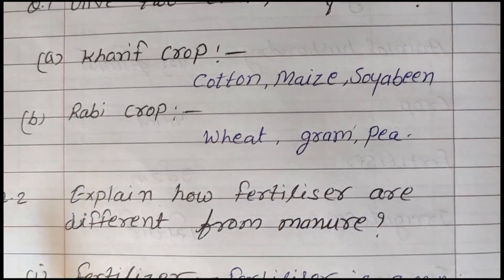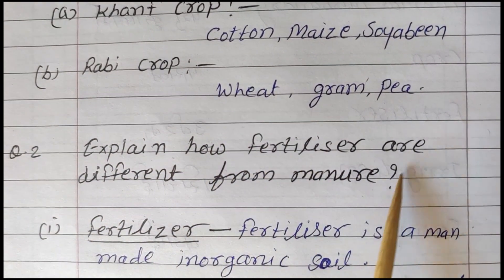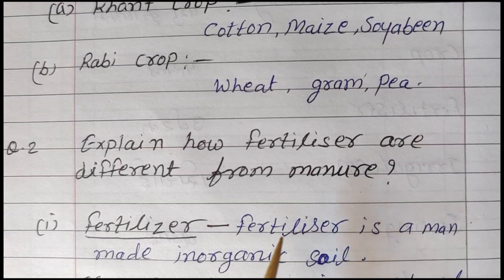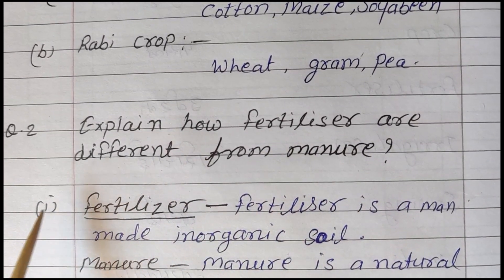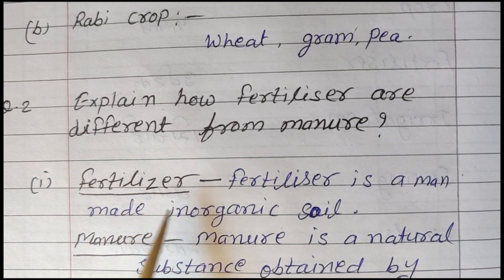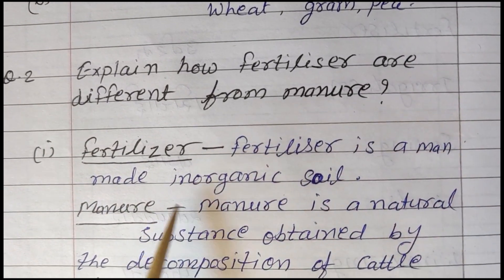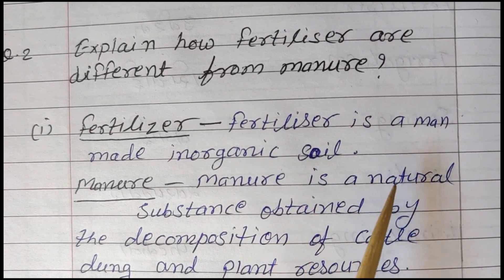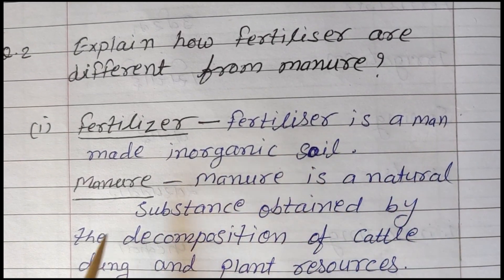Question 2: Explain how fertilizers are different from manure. (Urbarak aur khad mein kya antar hai?) Point 1 — Fertilizer: Fertilizer is a man-made inorganic soil additive. (Fertilizer ek manushya dwara banaya gaya aur akarbnik padarth hai.)